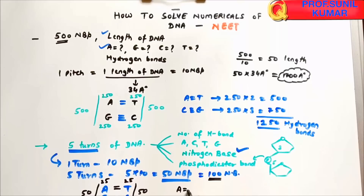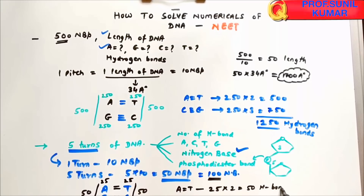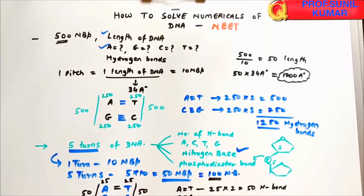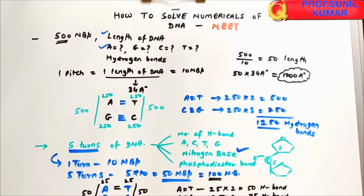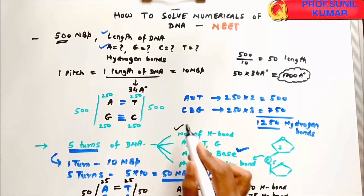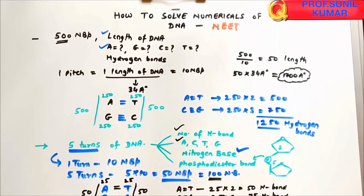Between C and G there is a triple bond: 25 × 3 = 75 hydrogen bonds. Total hydrogen bonds = 50 + 75 = 125. So the number of hydrogen bonds is 125, and A = C = T = G = 25 each.